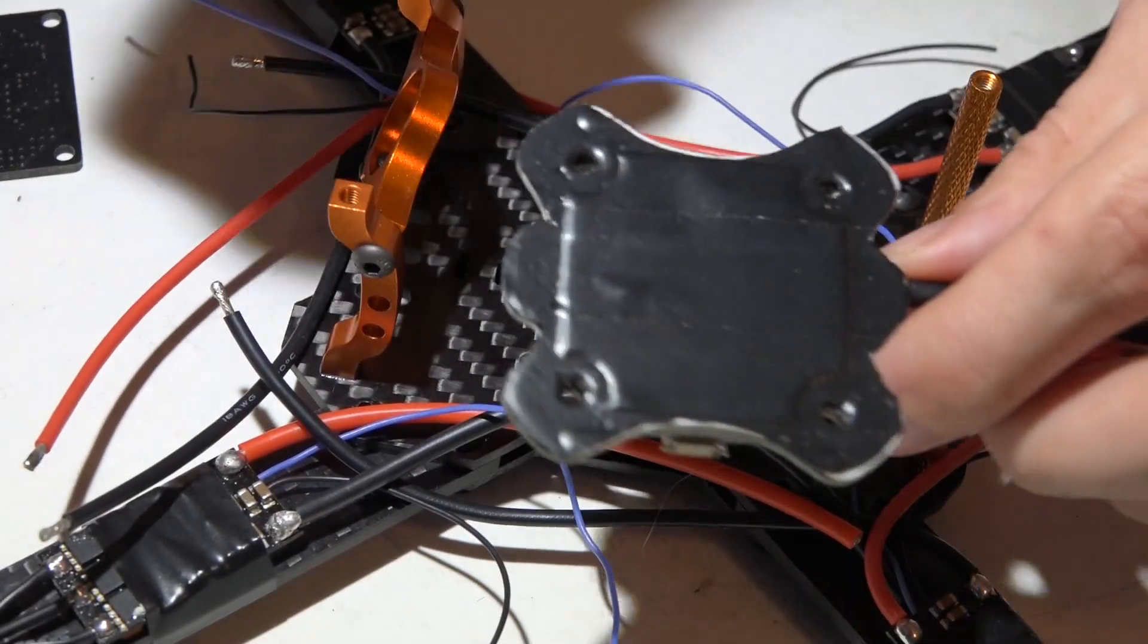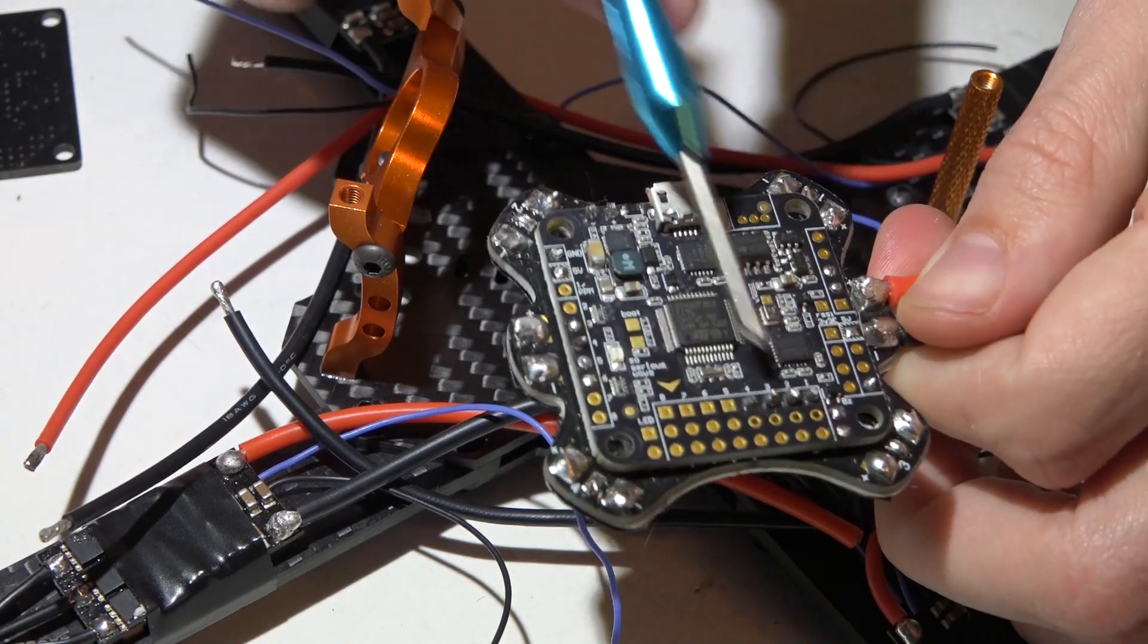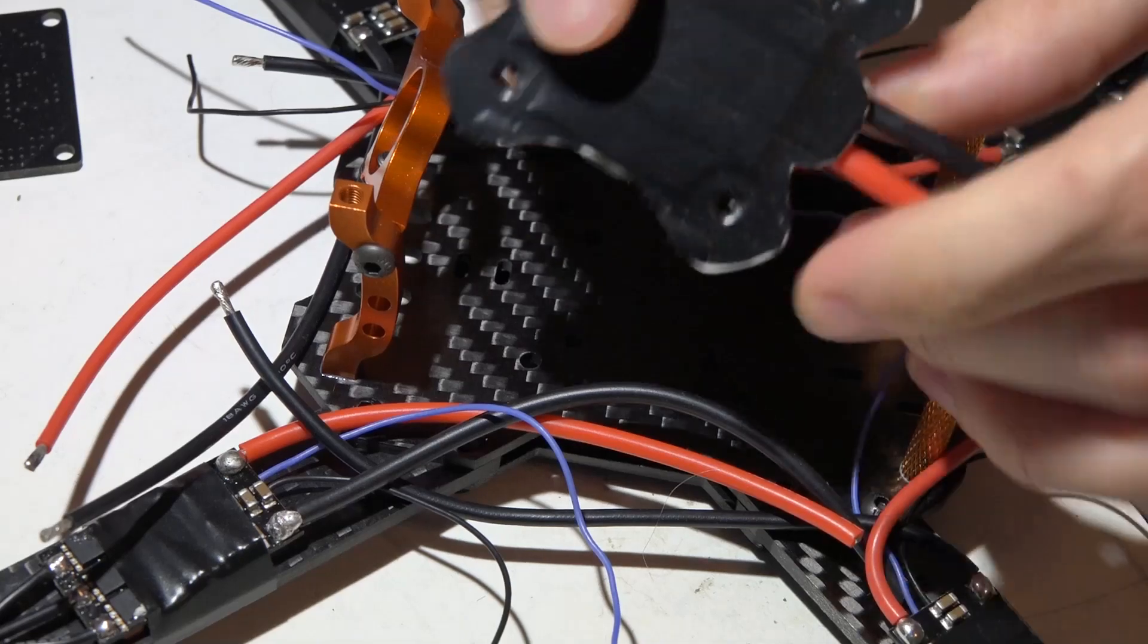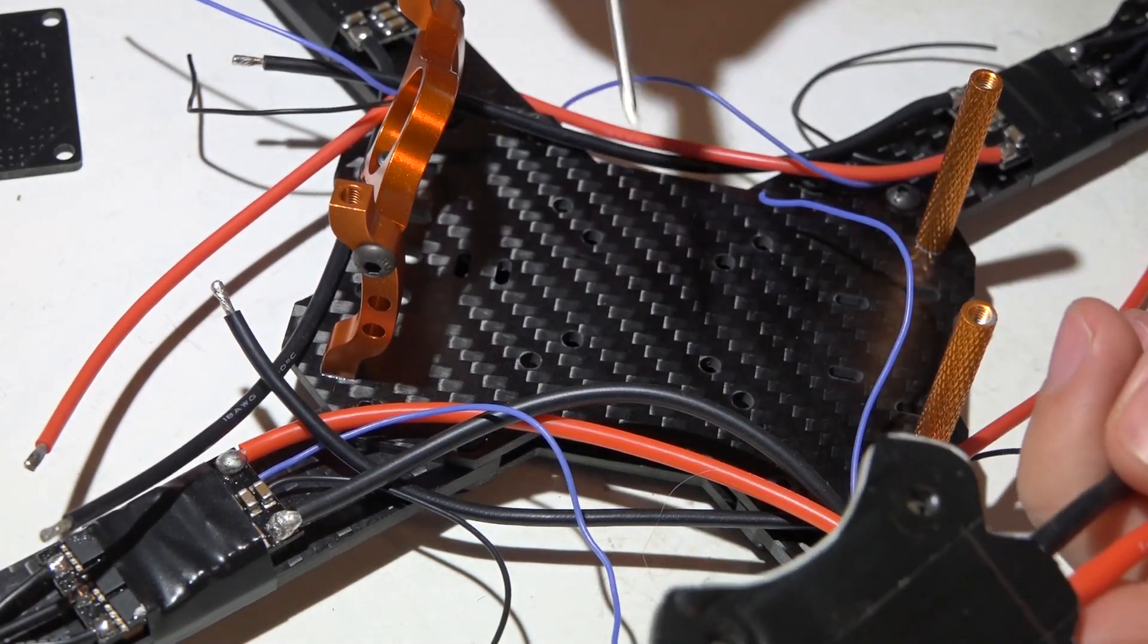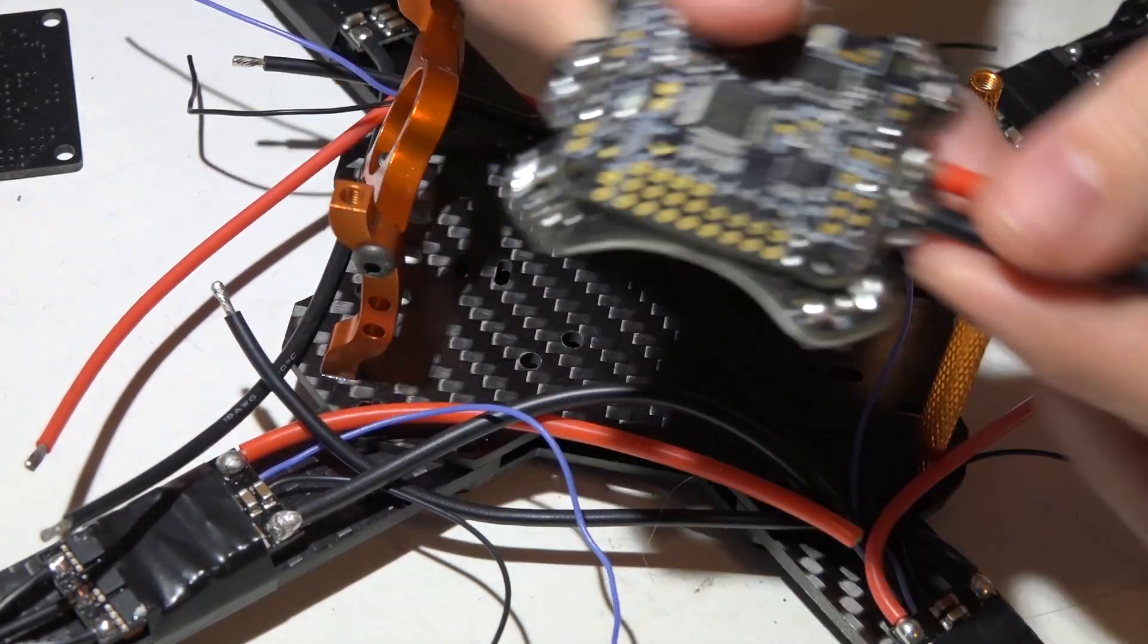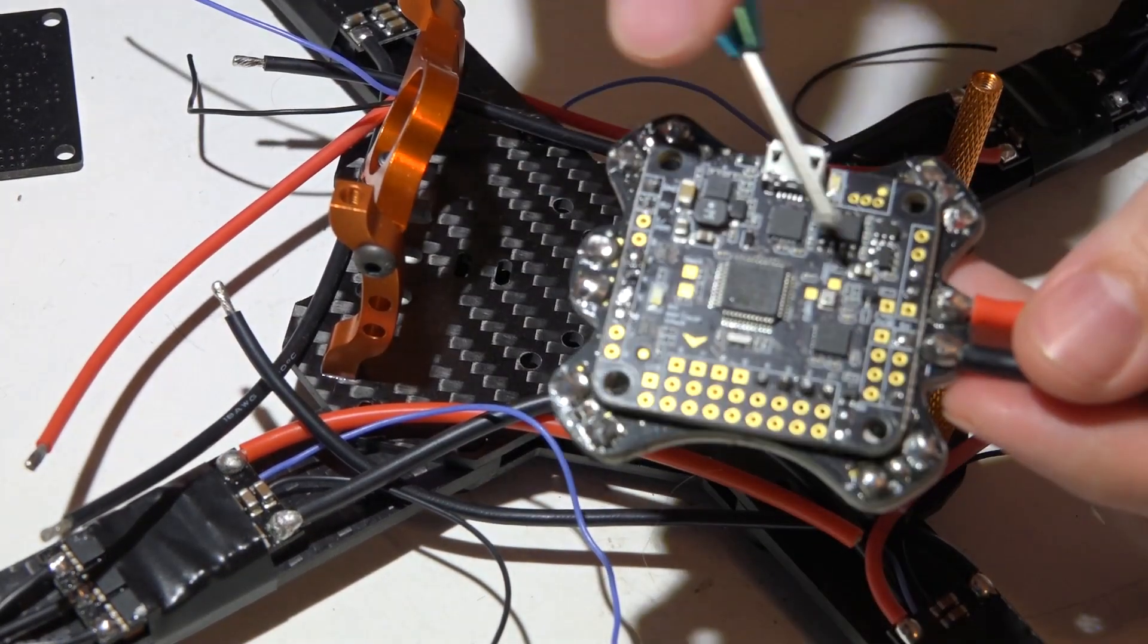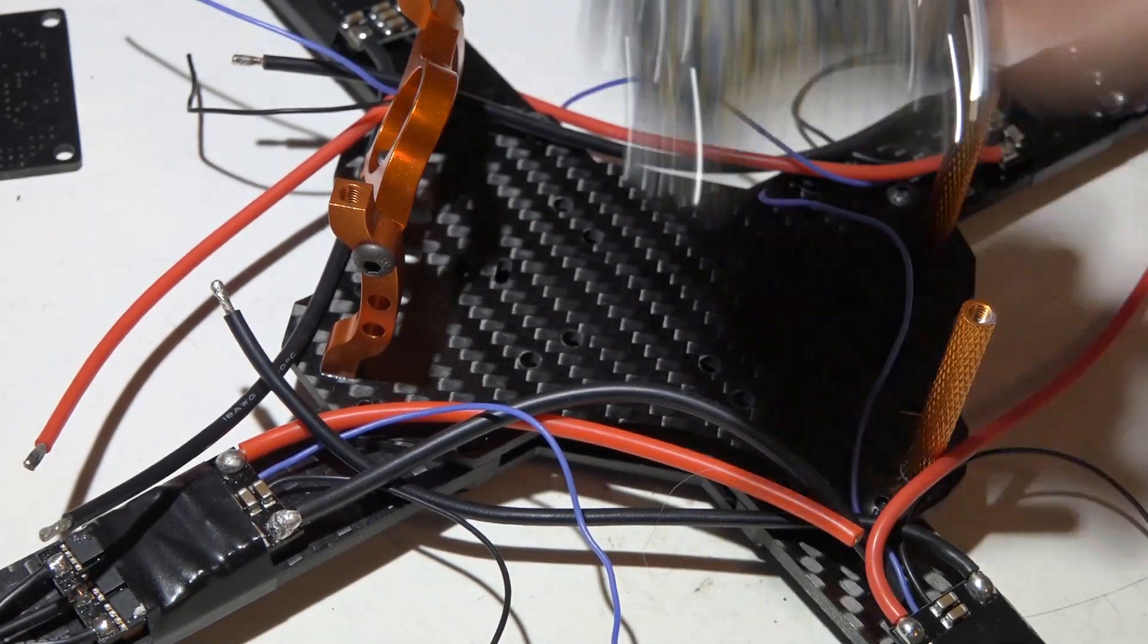I do highly recommend putting electrical tape on the bottom side because these pin headers on the PDB, once you screw this down, the pressure is actually going to make those pin headers come in contact with the carbon fiber. And carbon fiber does conduct electricity, so as soon as you plug in the battery, your flight controller would fry. It's actually happened to me before, actually quite a few times.